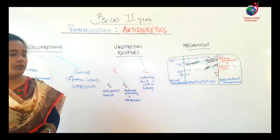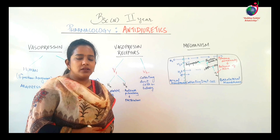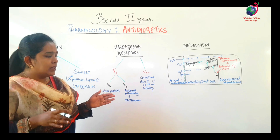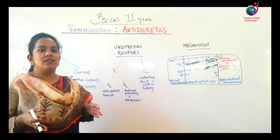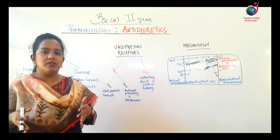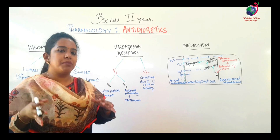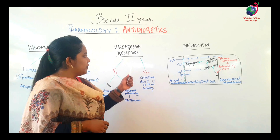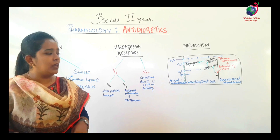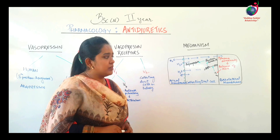The second type is the V2 receptor. V2 receptors are primarily present in the collecting duct cells or collecting tubule cells of the kidney, and they enhance the antidiuretic action. Some V2 receptors may also cause vasodilation in blood vessels of the kidney. The antidiuretic action we want in the body is obtained from the V2 receptors of vasopressin.